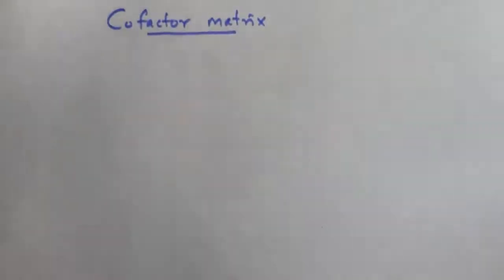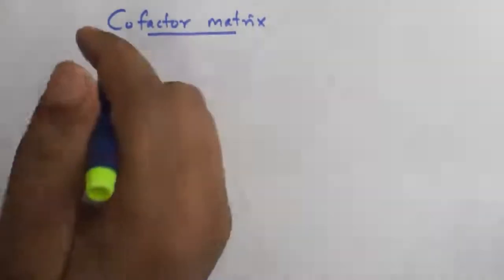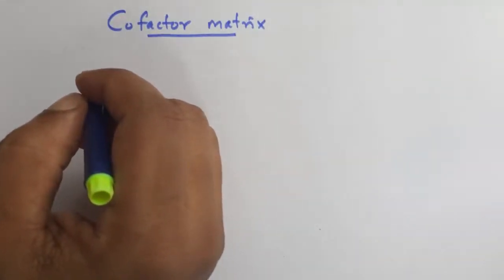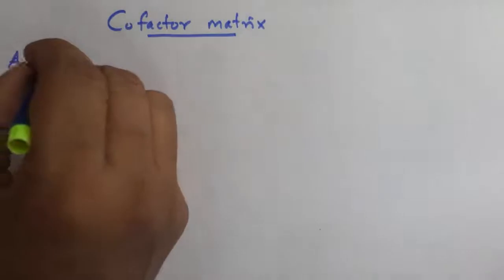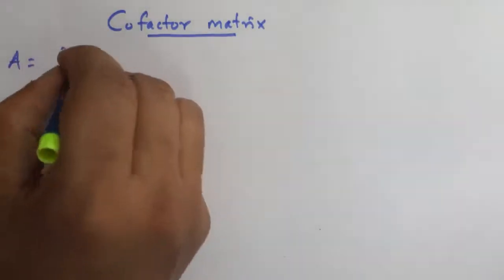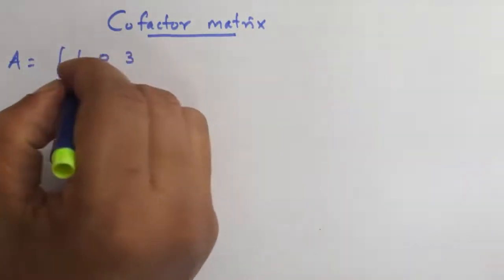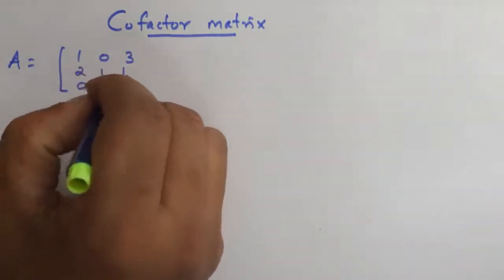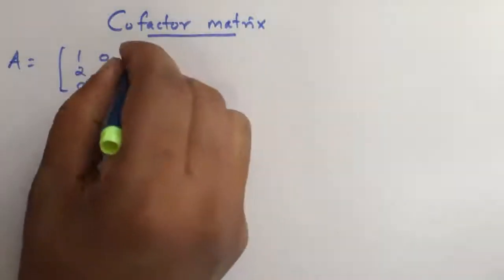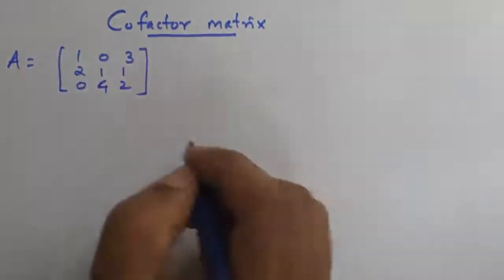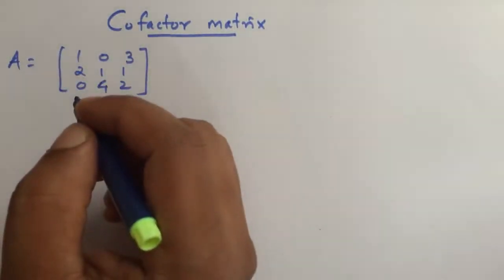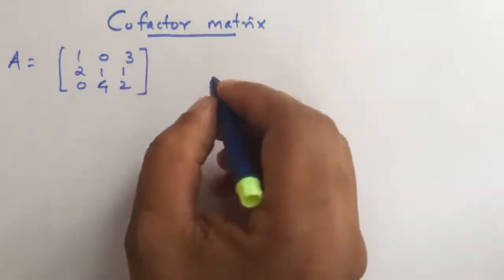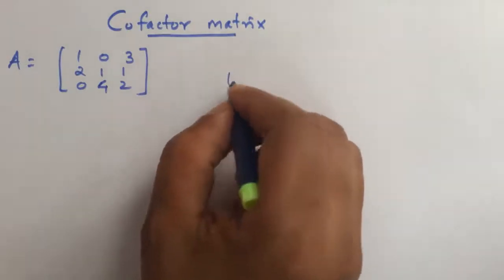A matrix is a very easy method. I will tell you a trick. A is equal to 1 0 3 2 1 1 0 4 2. This is a 3x3 matrix.